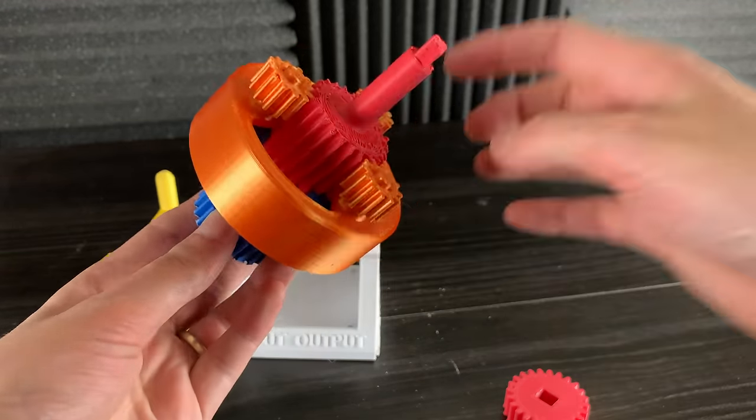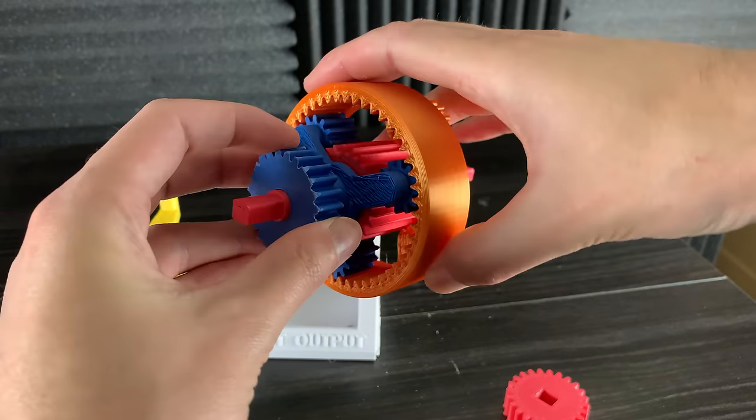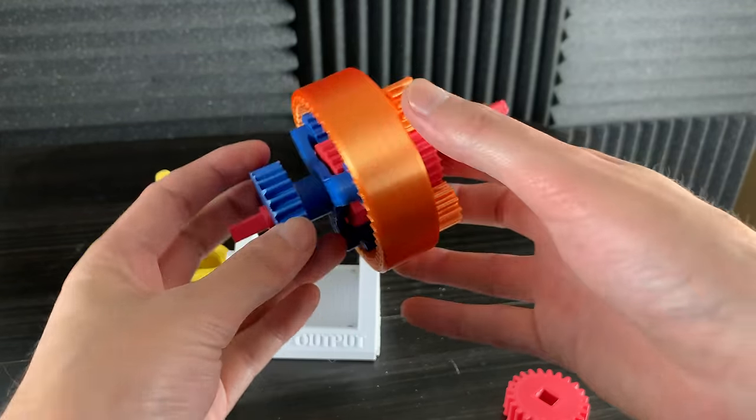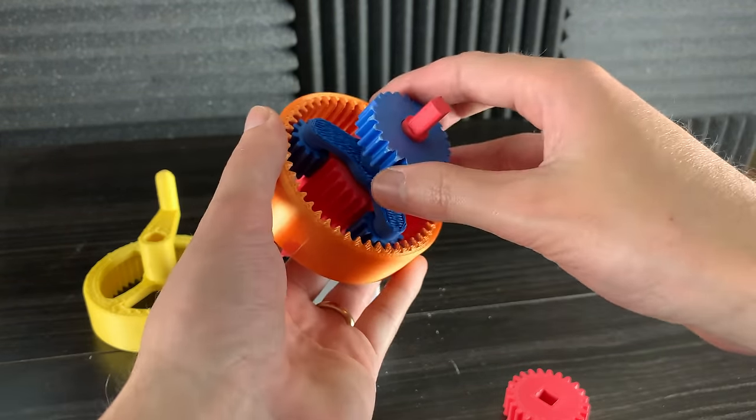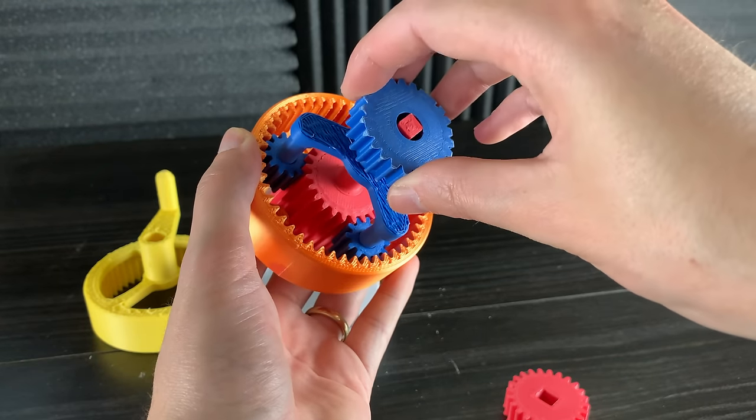Here you can see the two sets of planet gears orbiting around the same sun gear. This blue part is called the planet carrier. It holds the planet gears in place.